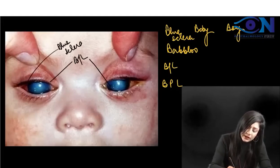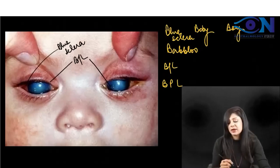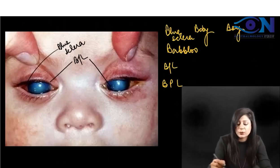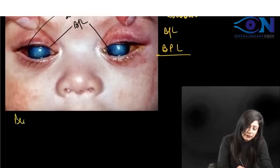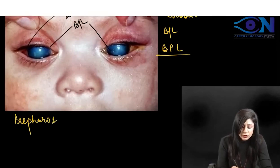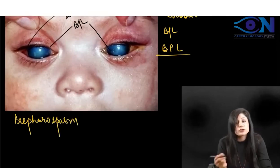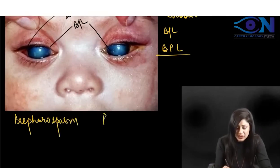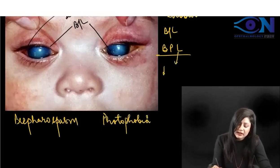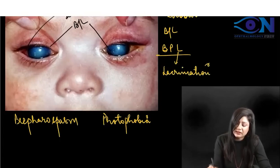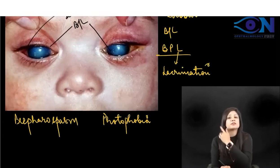This baby usually presents with the BPL card — below poverty line. B is for blepharospasm; blephero means eyelids. So this baby will come with blepharospasm, then we have photophobia, and then L will be the lacrimation. The classical triad is blepharospasm, photophobia, and lacrimation.